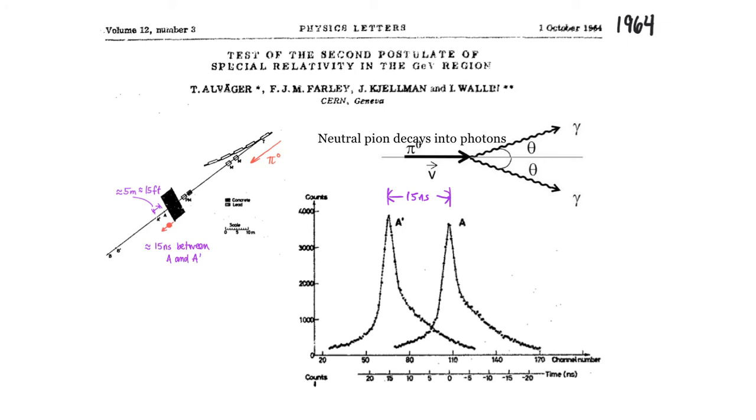There are many other experiments that have all reached the same conclusion. Like every experiment that has been done to measure the speed of light with respect to the speed of the source has been consistent with the second postulate that the speed of light is constant independent of the speed of the source. So for the purposes of relativity, we can take that postulate as verified or validated experimentally.